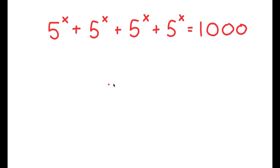In this problem, I have 5 to the power of x plus 5 to the power of x plus 5 to the power of x plus 5 to the power of x is equal to 1,000.